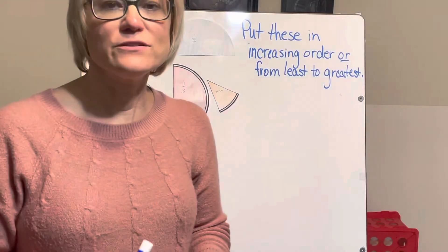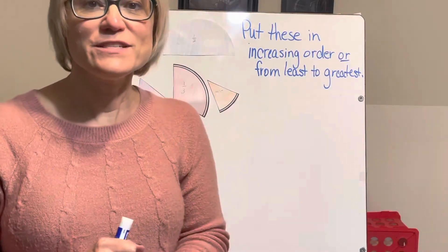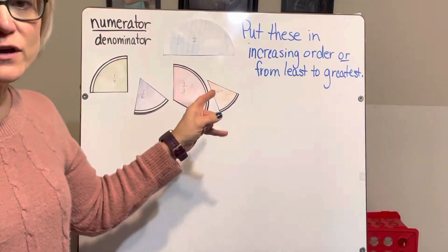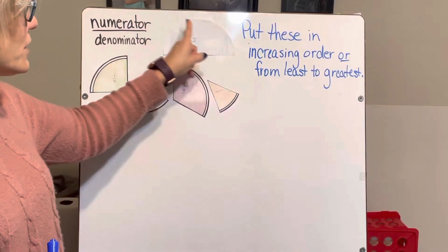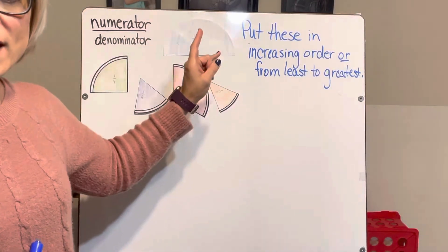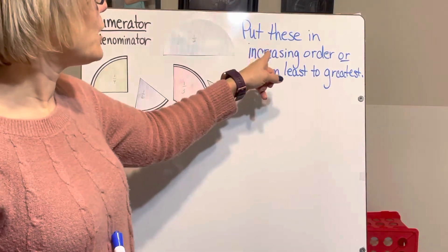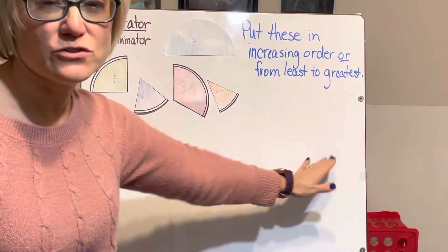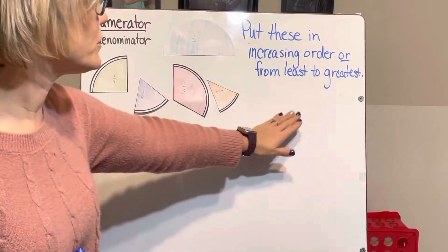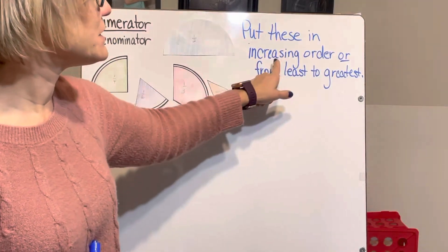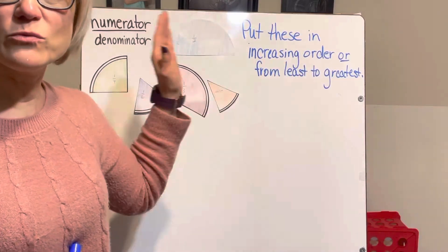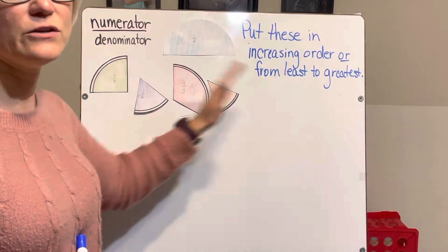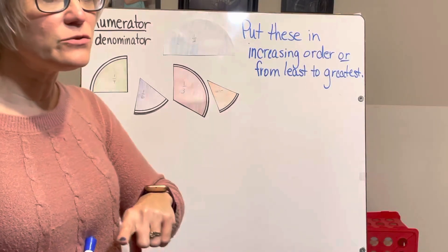Hello everybody and welcome back to Learning at Home with Mrs. V. Today we're going to compare these pictures of parts of a whole to determine which one is the least and which one is the greatest. We're going to put them in order from least to greatest — that's called increasing order.